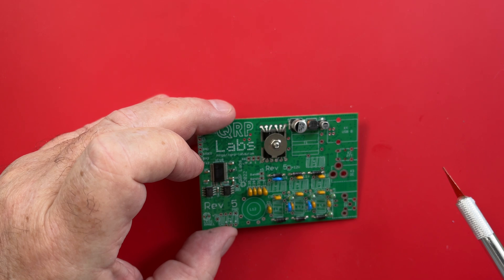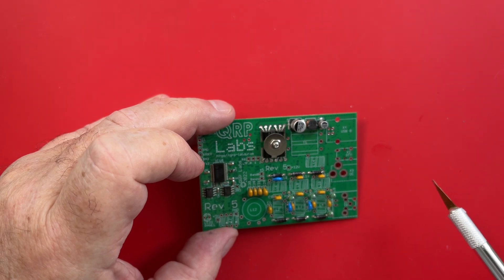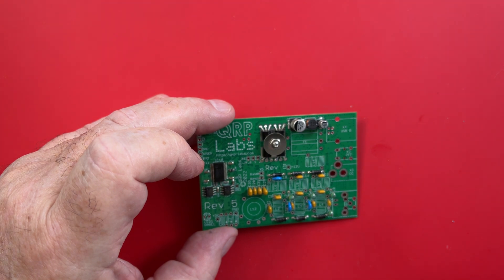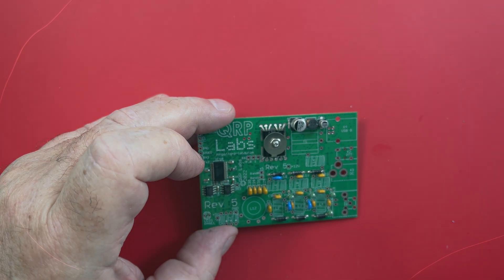So I thought it'd be a good idea just to do a little section about toroids and why they're just not difficult. One of the things about building a kit that seems to worry people is winding toroids. So at the risk of being accused of teaching grandmother to suck eggs, I thought I would just try and explain it in a simple way.